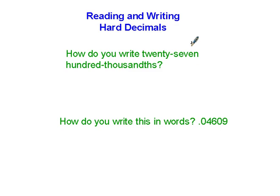Well, first of all, we have to review what the places are called after the decimal. This first place is called tenths, tenths with a T-H. Then hundredths, thousandths, ten thousandths, and hundred thousandths.